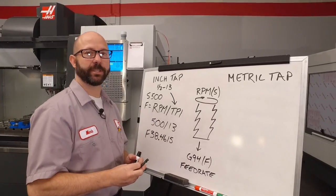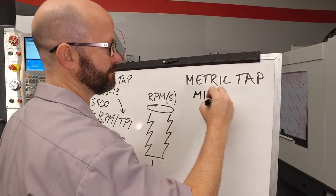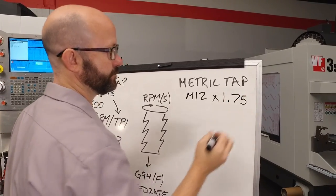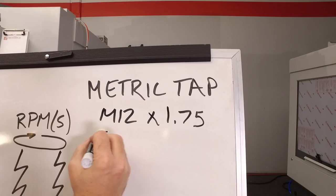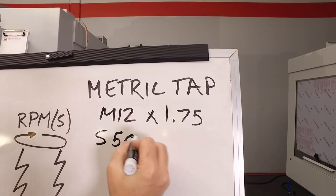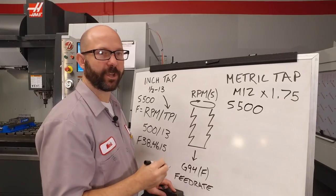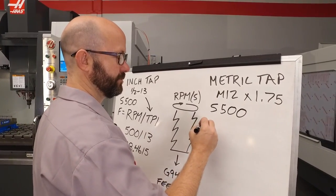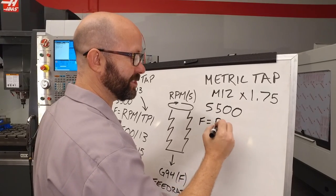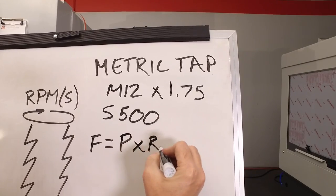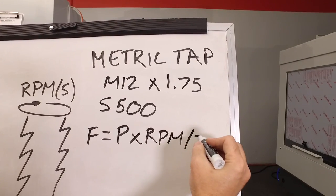Now, the tap that we're using is an M12 by 1.75. We're going to go ahead and fill in our RPM here as S500. But now we come to the hard part again. What is our feed rate? We've got a formula for that. We're going to use F equals pitch times RPM divided by 25.4.